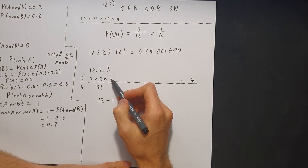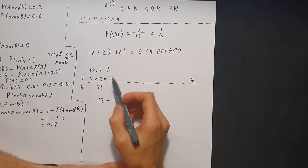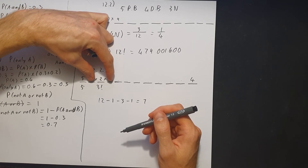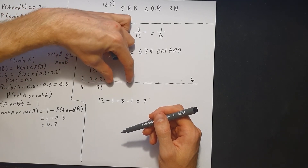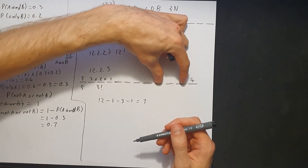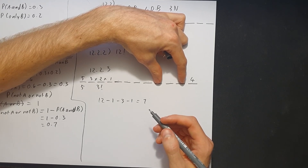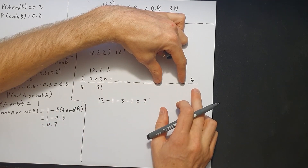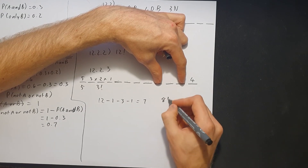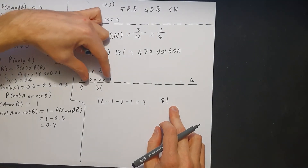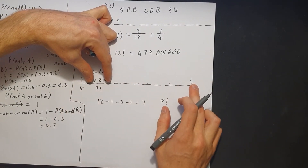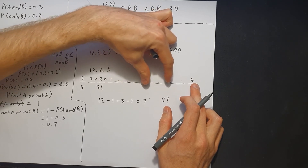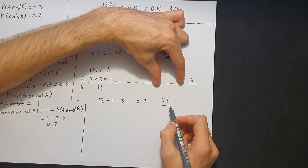Now, because the three novels must stay together, we can treat them as a block. That block can be placed in positions 2 through 9 — that's 8 possible positions for the novel block. So the novels' block contributes 8 factorial arrangements when considering all the remaining books arranged around it. That's where the 8 factorial comes from.